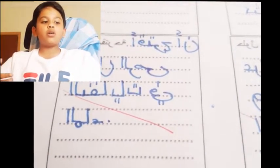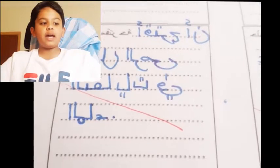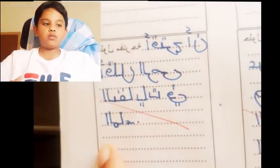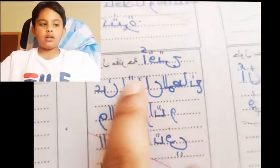Now Hulul Muqtariha, again from the last exercise, that means what do you suggest? Aqtarihu for tulawwuth al-Maa'i, I suggested Aqtarihu an Aqlul rameen nafaiyat fi al-Maa', that means to reduce the amount of waste thrown in water.